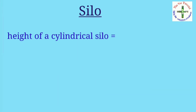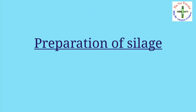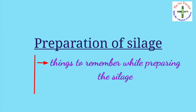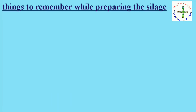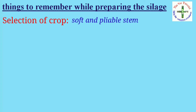Normally the height of a cylindrical silo is taken as double its diameter. Now let's study the preparation of silage. The first thing to remember is the selection of crop — a crop with a soft and pliable stem is more suitable for silage making.